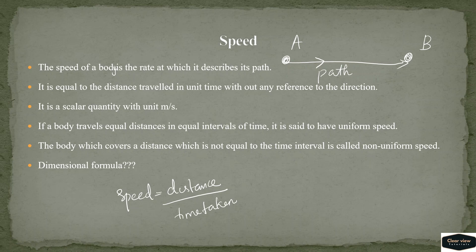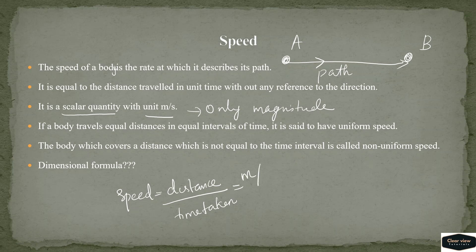Speed is a scalar quantity — it has only magnitude, not direction. The unit of speed is meter per second. Distance divided by time gives meter per second, which is the unit of speed.